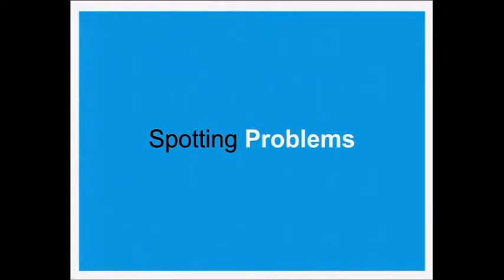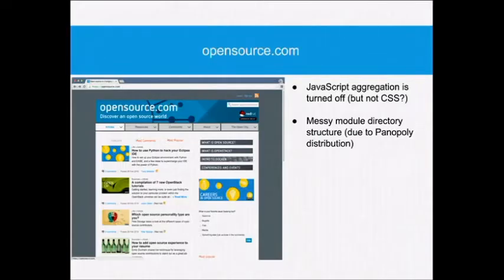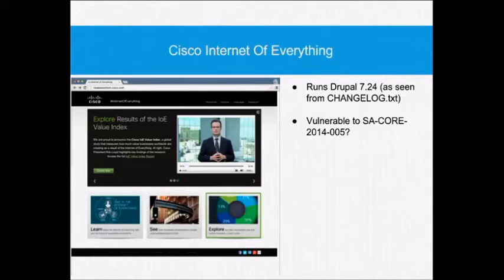Spotting problems. This part isn't about pointing and shaming — it's just to show how easy it is to see problems like the ones I've just addressed on sites without having to log in or do anything, just looking at the source code. For example, opensource.com: JavaScript aggregation is turned off but not CSS — I don't know why. They use the Panopoly distribution, which means their modules are in weird places, but because CSS aggregation is turned off I can see exactly where each module is stored — not particularly brilliant. Cisco Internet of Everything: if you look at the changelog.txt, it says it's running Drupal 7.24, which is pre-Drupal Armageddon. I'll leave it to you as a user exercise to see if that's actually vulnerable.